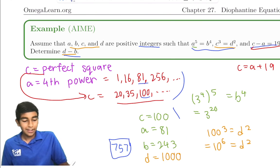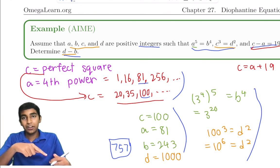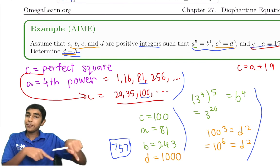and we found one pretty quickly. And then we just plugged stuff in, found b and d, and found d - b, and we got our answer, 757. That was a great problem.